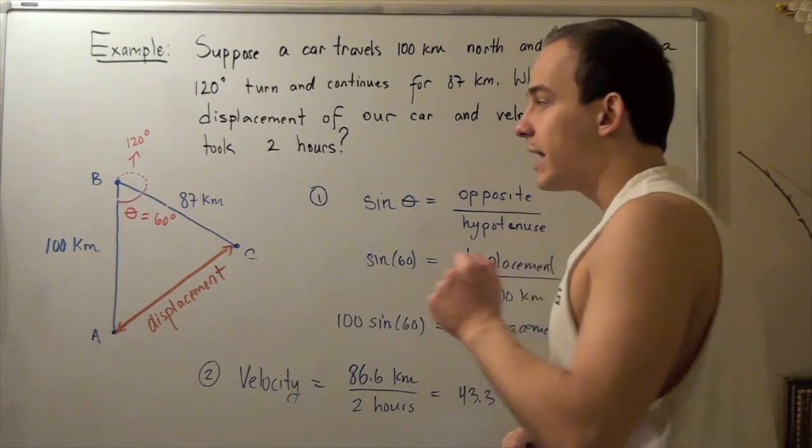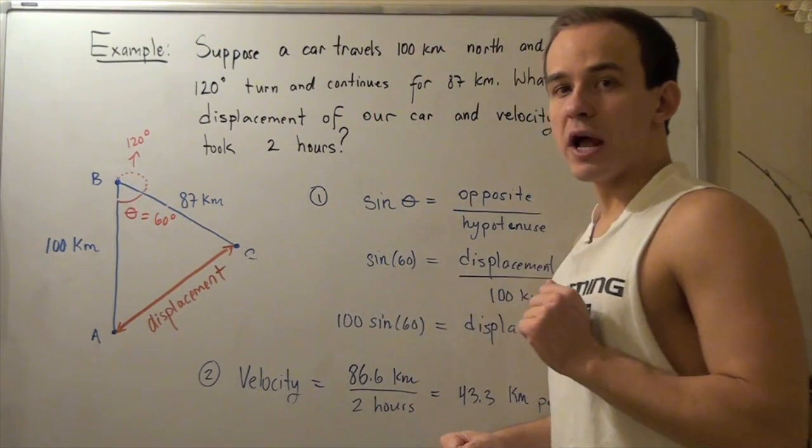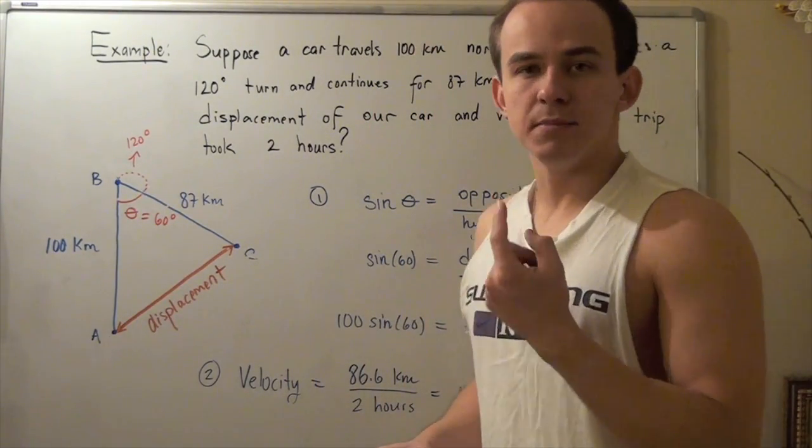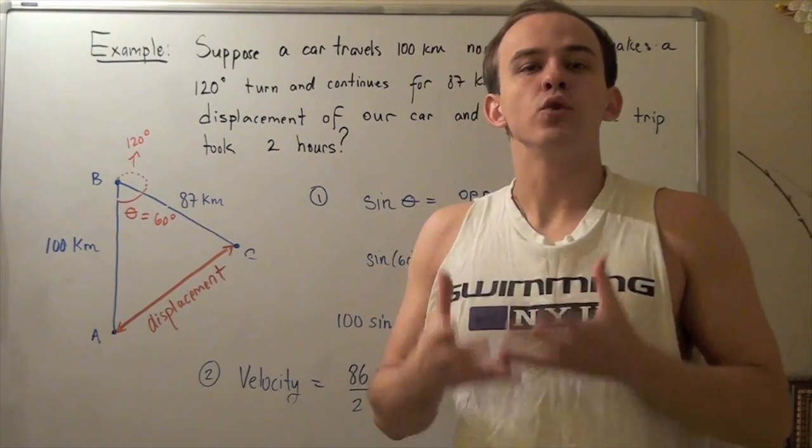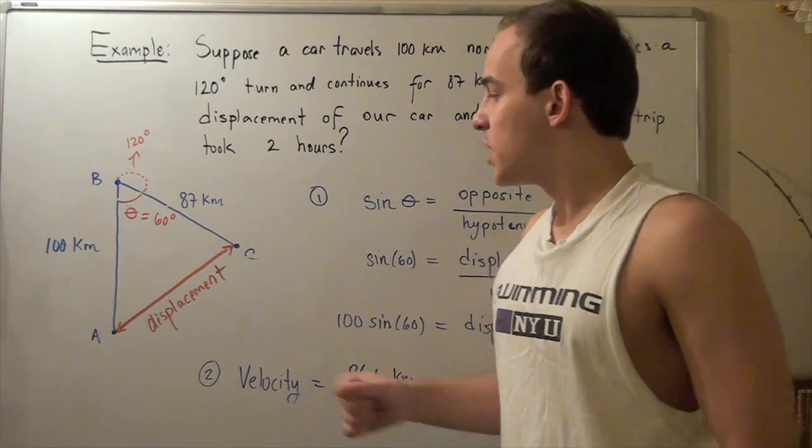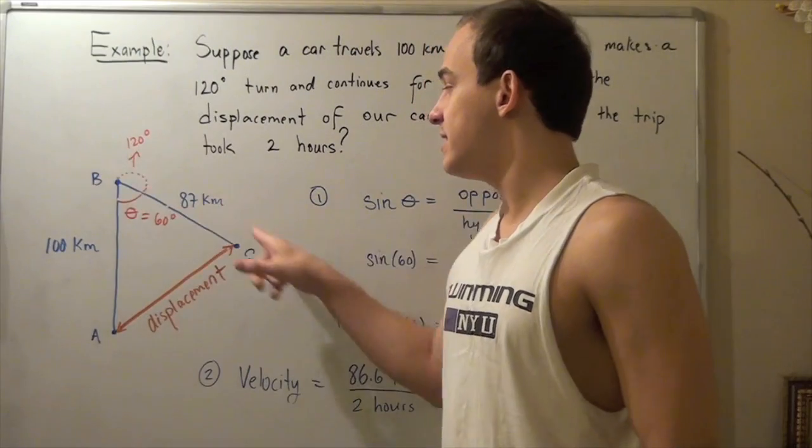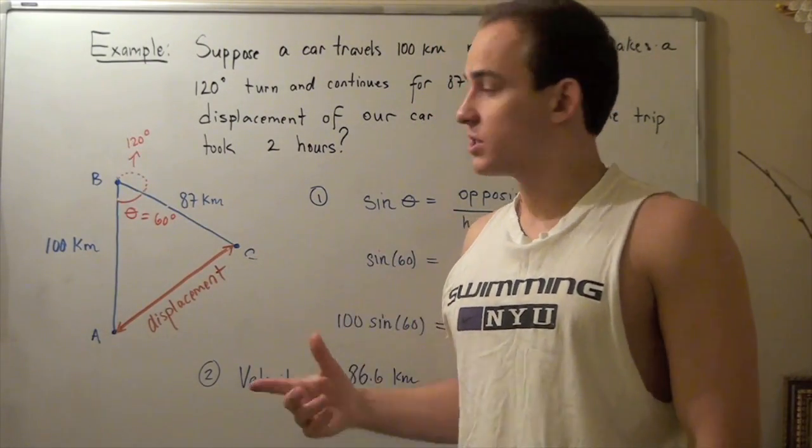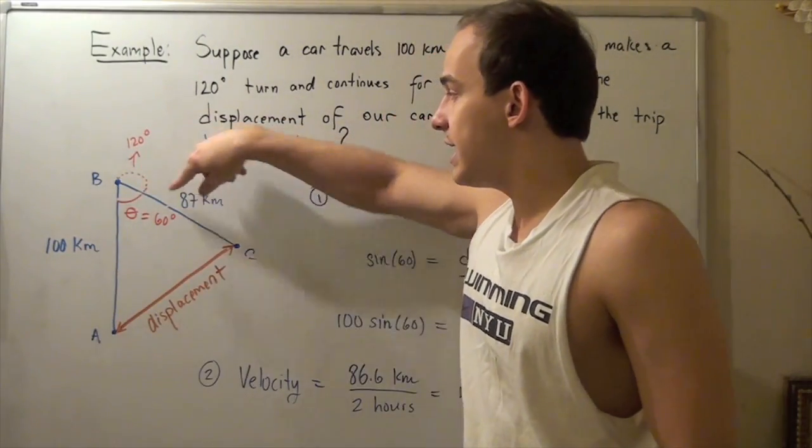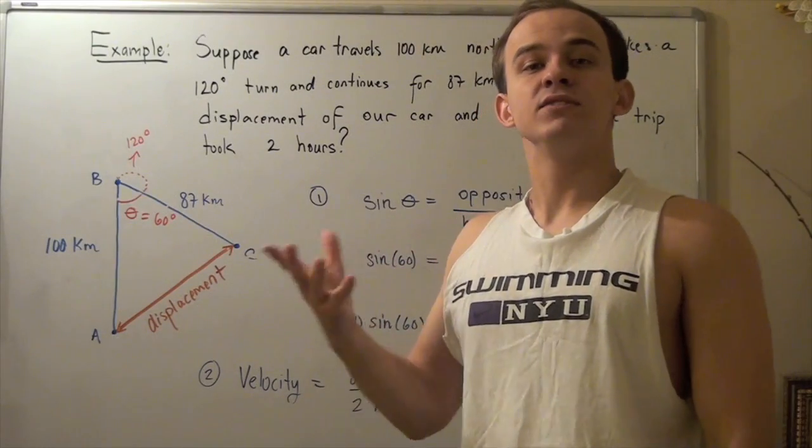Note that the distance our car traveled is different than our displacement. The distance is the actual path our car took. Going from point A to B to C is our actual distance. So, 100 plus 87 gives us 187 kilometers.